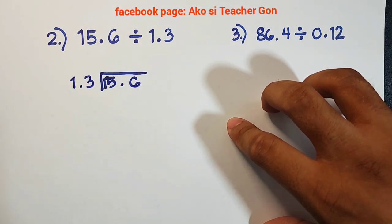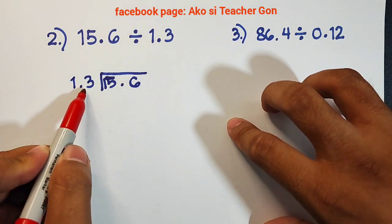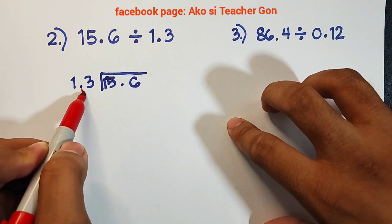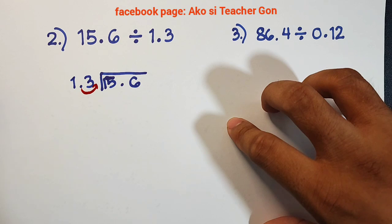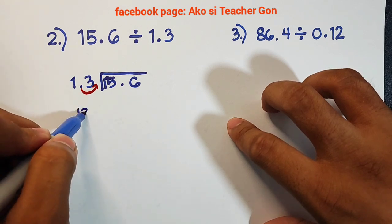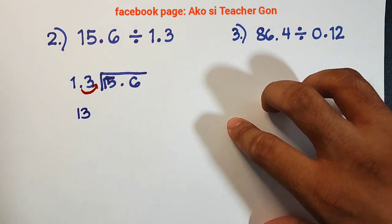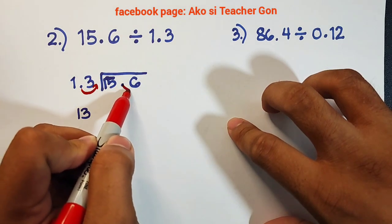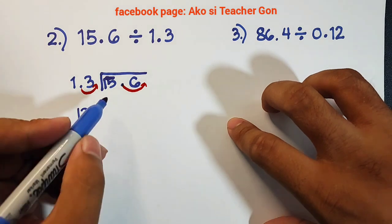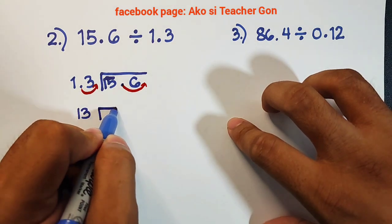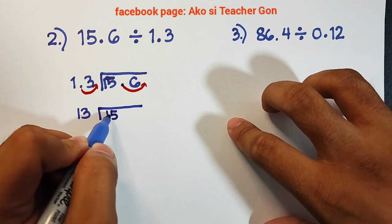As you can see, 1.3 is your divisor. We will move 1 unit from left to right to make it a whole number. And that is equal to 13. And as for your dividend, we will also move 1 unit and it will become 156.